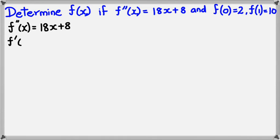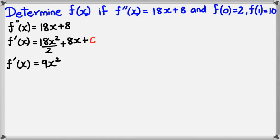So first off, we'll figure out what f dash of x is. And to do that, we integrate 18x plus 8, which means we would get 18x squared divided by 2 plus 8x plus c. Now what we can do is, from this point, we can actually integrate it once more. But first we'll simplify it to 9x squared plus 8x plus c.